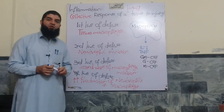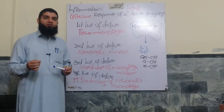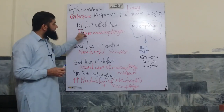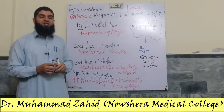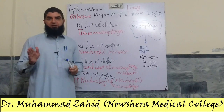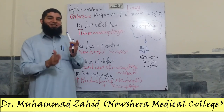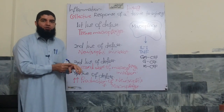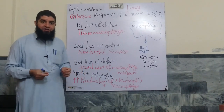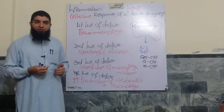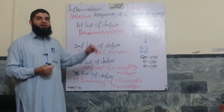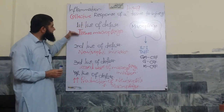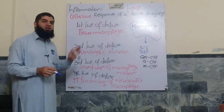Here we discuss the sequence of events when we discuss the role of neutrophils and macrophages as a line of defense in inflammation. The first line of defense is constituted by the tissue macrophages. Macrophages are everywhere — they have different names in different tissues: histiocytes in the skin, microglia in the brain, Kupffer cells in the liver, and alveolar macrophages in the lungs. Owing to their physical presence in every tissue, they constitute the first line of defense against tissue injury and subsequent inflammation.